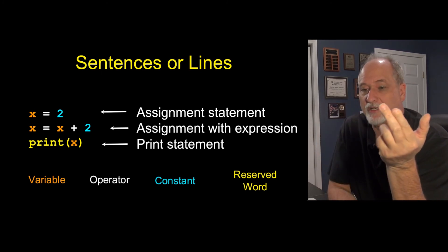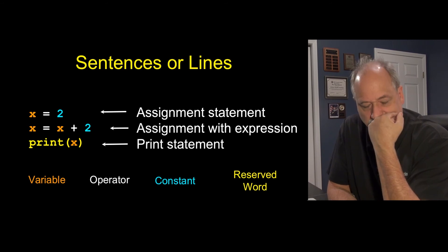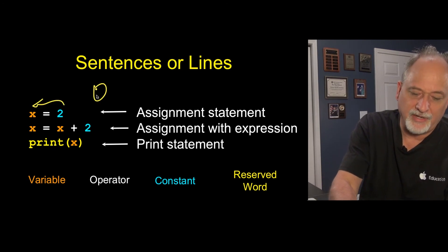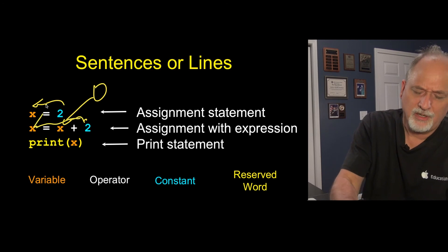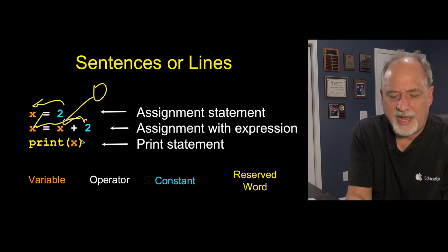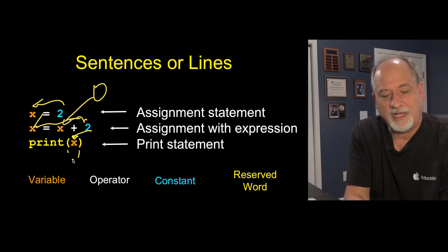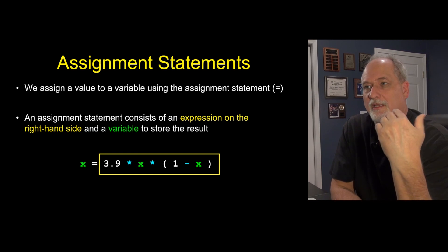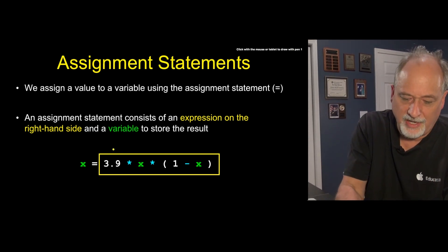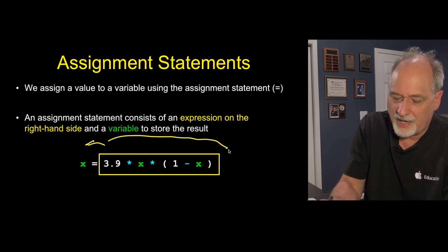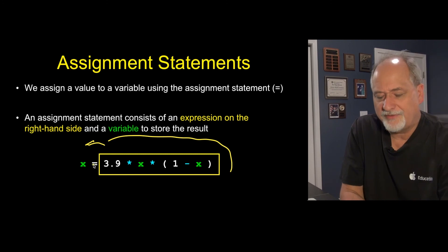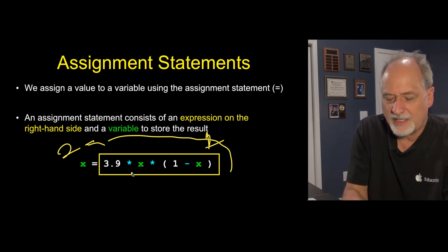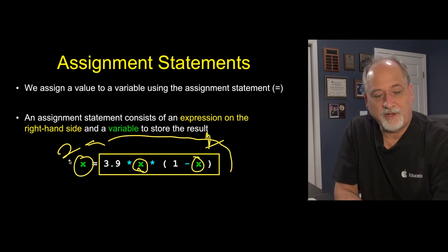We've talked about constants, reserved words, and variables. Here we have a statement where we set x equals 2, then retrieve the old value of x and add 2 to it — that becomes 4 — and then print 4. Print is a built-in function and we pass in whatever we want to print; the parentheses are part of the function call. With an assignment statement you really have to get your head around the arrow nature: it evaluates the entire right-hand side before changing the left-hand side. You can think of it as two time steps — first it evaluates, then it does the copy. That's how you can have x on both sides of an assignment statement.